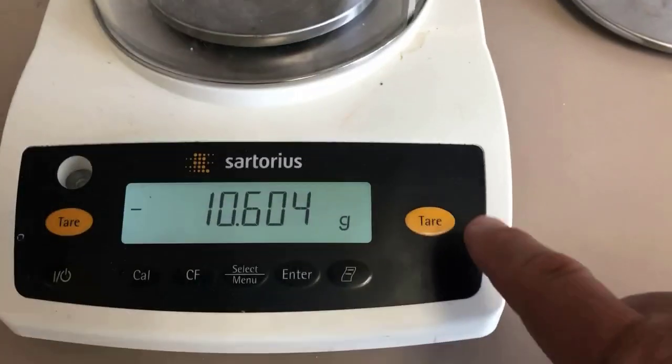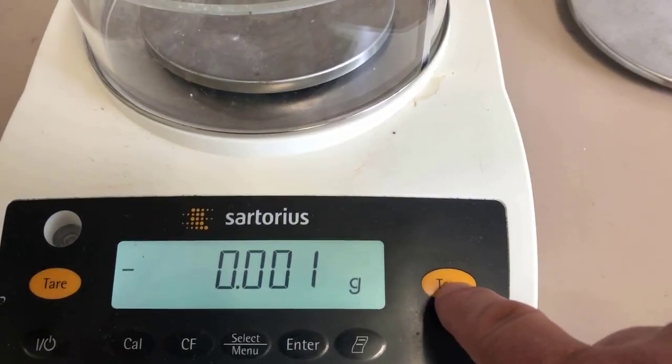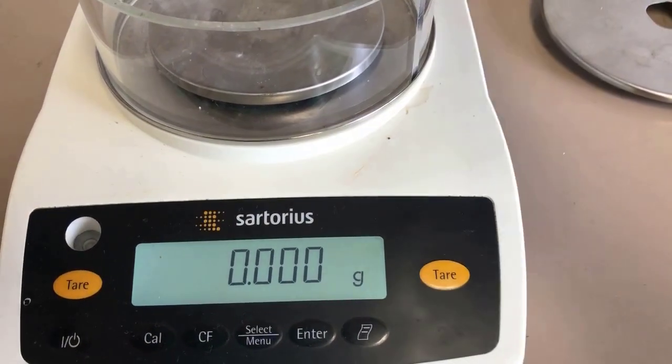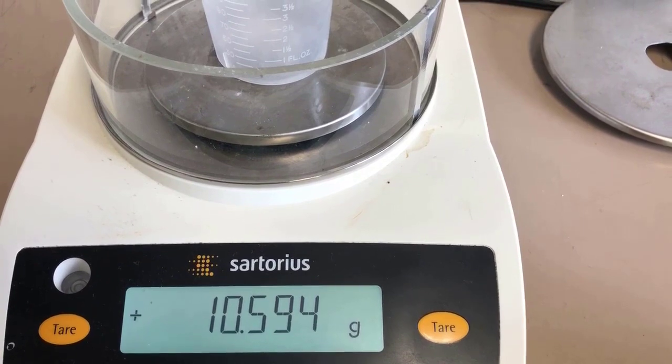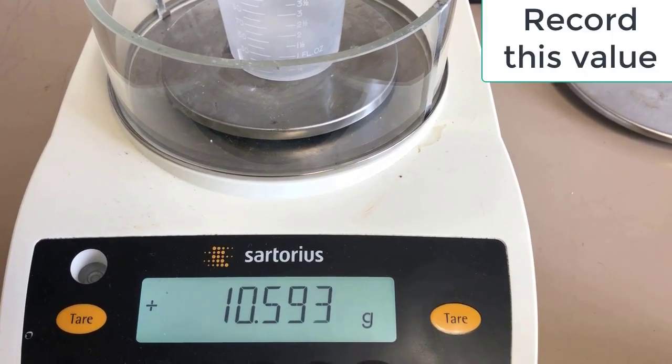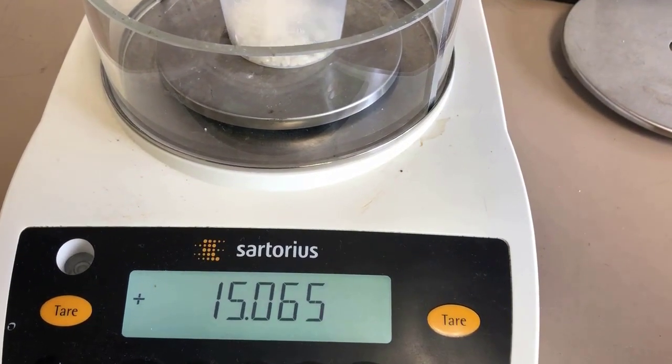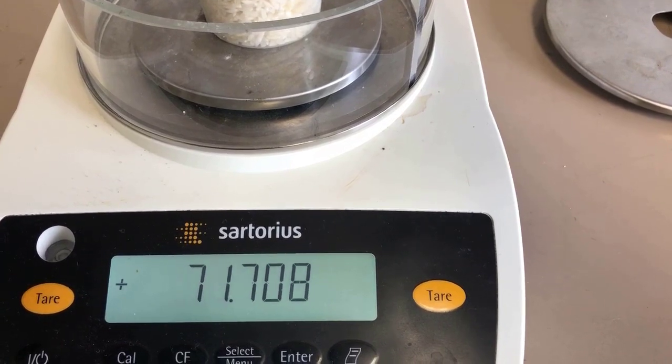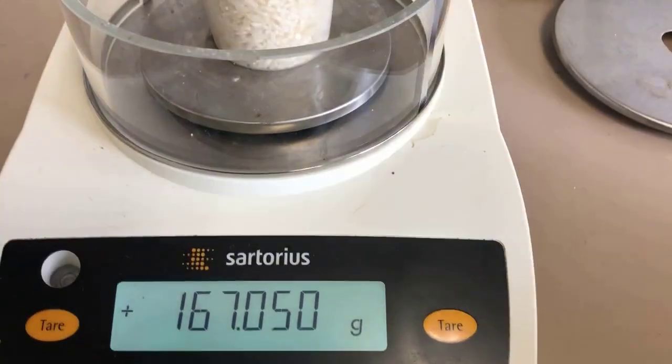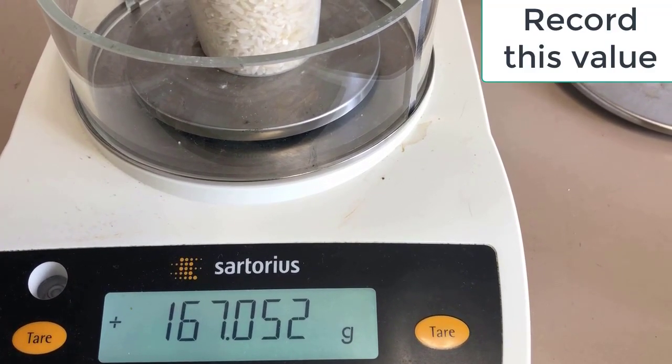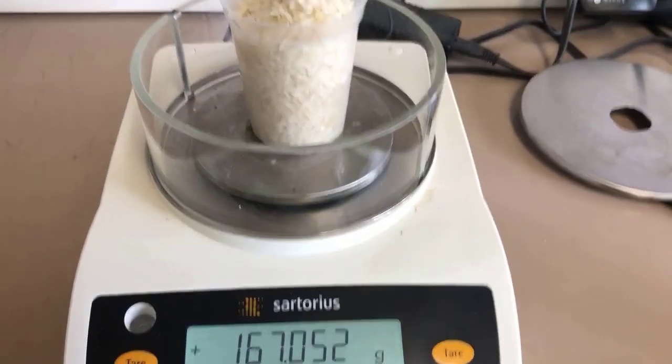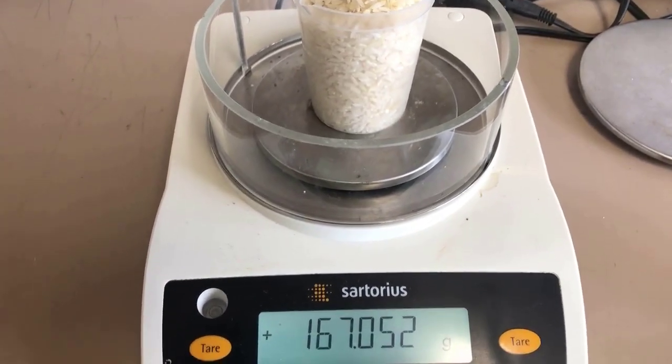So we're here at the balance and we will tare it out. Make sure it gets a zero on it. Put the cup on there. Now you have the mass of the cup. And then I'll add the rice to it slowly. And that's your mass of your rice in the cup. So again, you'll get the mass of rice by subtraction.